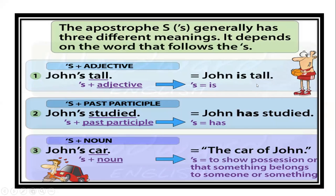¿Por qué enseñamos esto? Because in American English this is very common — las contracciones y apóstrofes son muy comunes en el inglés americano, en el lenguaje hablado and also in informal writing. Obviously in a formal letter you would not use apostrophes or contractions — you write everything in full. Apostrophe S plus noun — here it shows possession. John's car means 'the car of John' — el carro de John. The apostrophe S is used to show possession or that something belongs to someone.